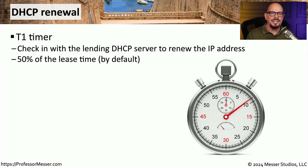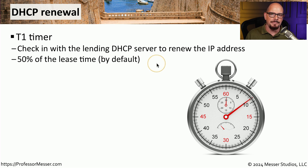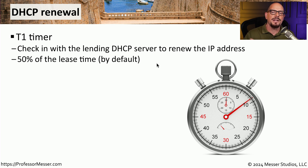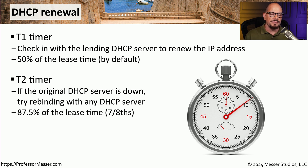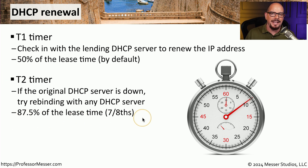The DHCP leasing process doesn't wait until the entire lease is complete before trying to renew. Instead, there are different timers that DHCP will use to provide that renewal. The first timer is a T1 timer, set by default at 50% of the lease time. No communication occurs between your device and the DHCP server until half of that lease is complete, at which time your device will attempt to communicate with the DHCP server and renew the lease. If the original DHCP server is no longer operating properly or has been removed from the network, we go to a T2 timer. By default, the T2 timer is 87.5% — or seven-eighths — of the lease time.